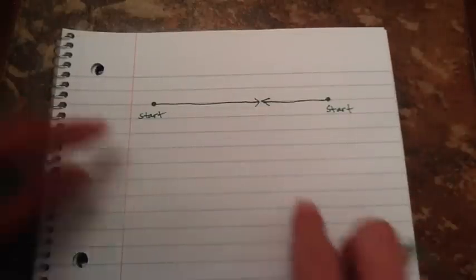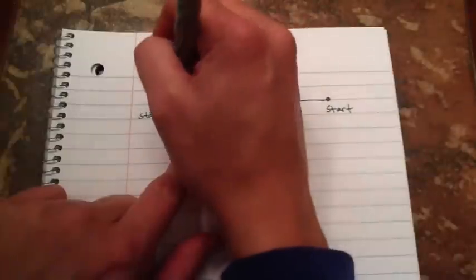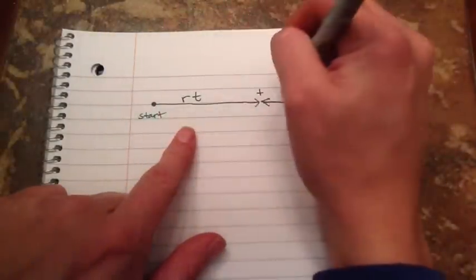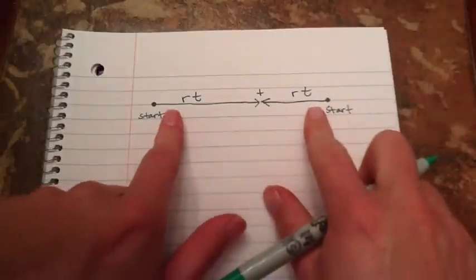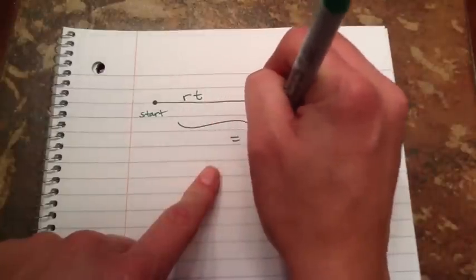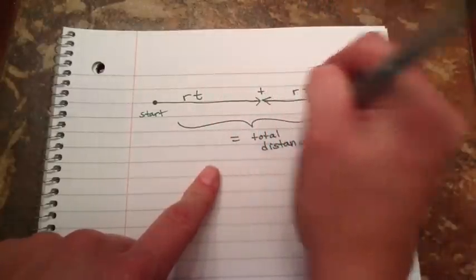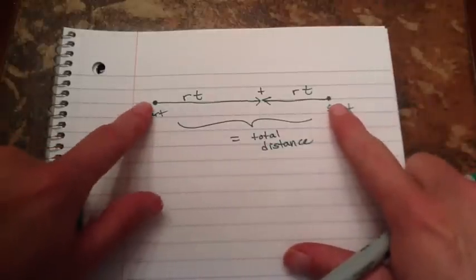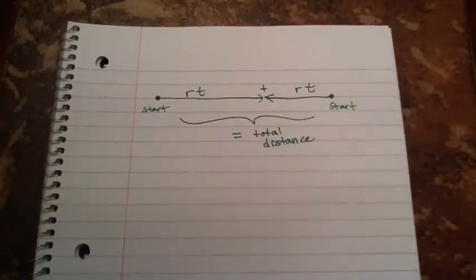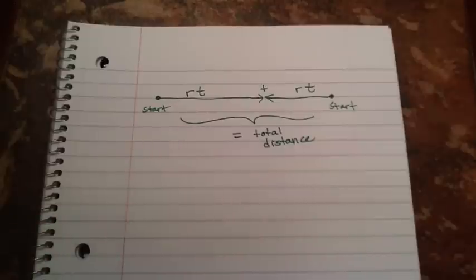It's the exact same type of problem. It's the rate and the time of the first one. Plus the rate and the time of the second one. Just like we did in the other one. That we're traveling this way. Equals the total distance. It's the exact same setup. It just looks different in the picture. Because they're starting somewhere else. Moving toward each other. And it asks when they meet. But you do the exact same thing.